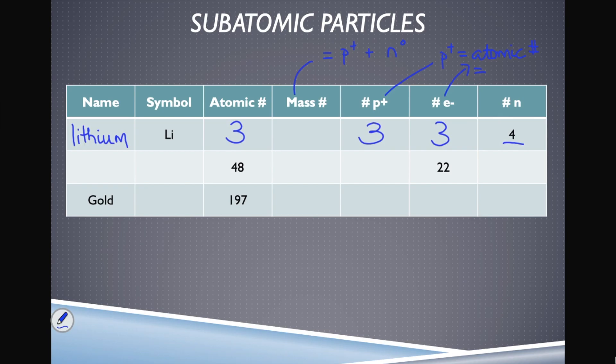Now for the mass number of lithium: three protons plus four neutrons equals seven. The mass number for lithium is seven.